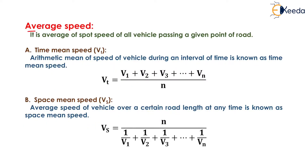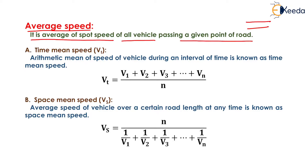The next topic is Average Speed. Spot speed is the speed of a particular vehicle at an instant of time. If we want to define average speed, it is the average of spot speeds of all vehicles passing a given point on the road. The spot speeds of all vehicles passing that cross section are counted and their average is known as Average Speed.